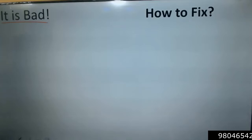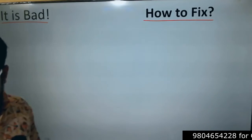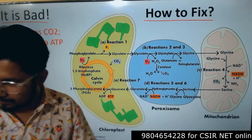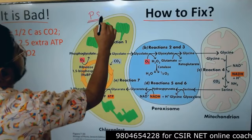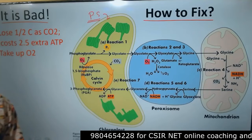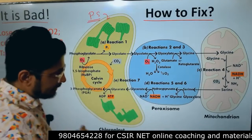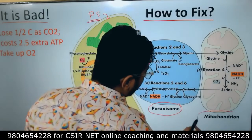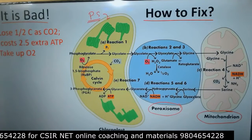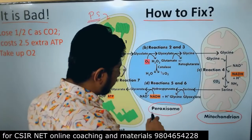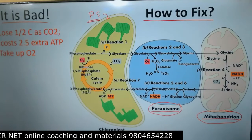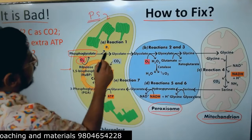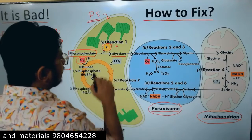Since photorespiration is bad for plants and therefore bad for us, how do plants fix it? Plants fix it via a separate, complicated pathway. Normally, photosynthesis takes place only in the chloroplast. But to fix the glycolate produced from phosphoglycolate, the metabolite must travel through the peroxisome and then the mitochondria. So two additional organelles are involved. First, phosphoglycolate is converted to glycolate in the chloroplast stroma, then glycolate is transferred into the peroxisome.